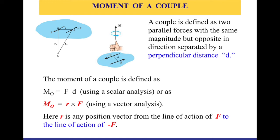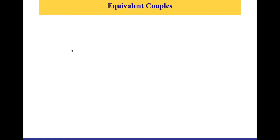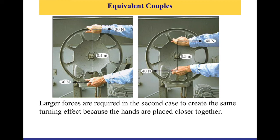In couples we care only about the distance between the two forces, not the distance from a point to the line of action of the force. This is why we introduce the concept of the free vector — the couple moment analysis is independent of position vectors r_A and r_B. The couple moment can move anywhere in the system, which is why we call it a free vector.